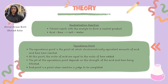Let me now explain the theory behind acid-base titration. The underlying principle is the neutralization reaction where the titrant reacts with the analyte to form a neutral product. This reaction is represented by the equation where acid reacts with a base to form salt and water. The equivalence point is a crucial moment in a titration — it is the point at which stoichiometrically equivalent amounts of acid and base have reacted. Simply put, at the equivalence point, the moles of acid are equal to the moles of base added.